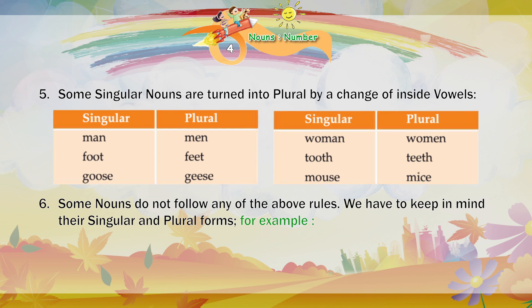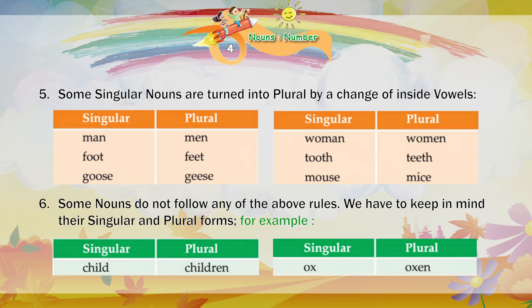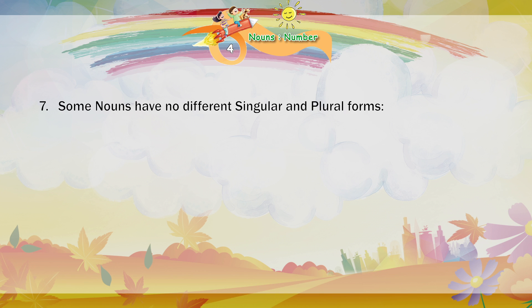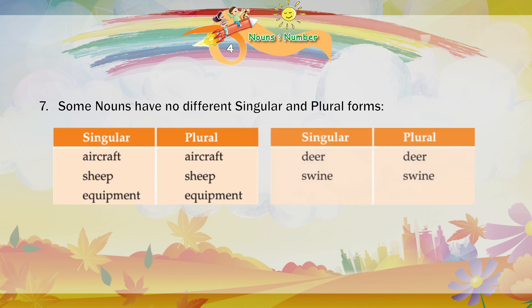Some nouns do not follow any of the above rules; we have to keep in mind their singular and plural forms. For example: Child — Children. Ox — Oxen. Some nouns have no different singular and plural forms: Aircraft — Aircraft. Sheep — Sheep. Equipment — Equipment. Deer — Deer. Swine — Swine.